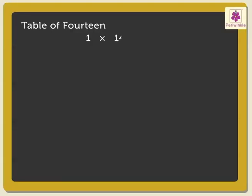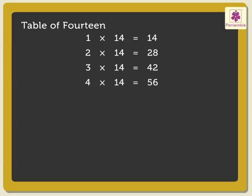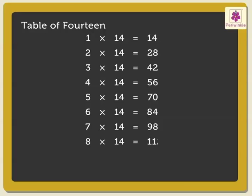Next is the table of 14: 1×14 is 14, 2×14s are 28, 3×14s are 42, 4×14s are 56, 5×14s are 70, 6×14s are 84, 7×14s are 98, 8×14s are 112, 9×14s are 126, 10×14s are 140.